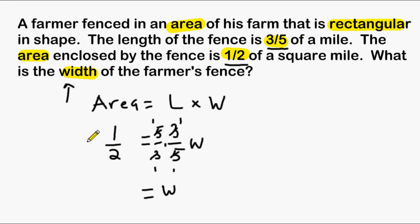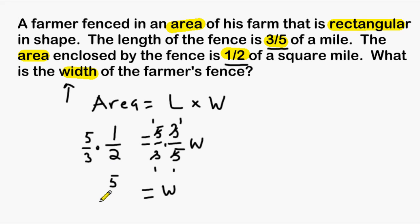To balance our equation, we also write five-thirds on the other side. We multiply the numerators — five times one equals five — and the denominators — three times two equals six. So the width is equal to five-sixths of a mile.